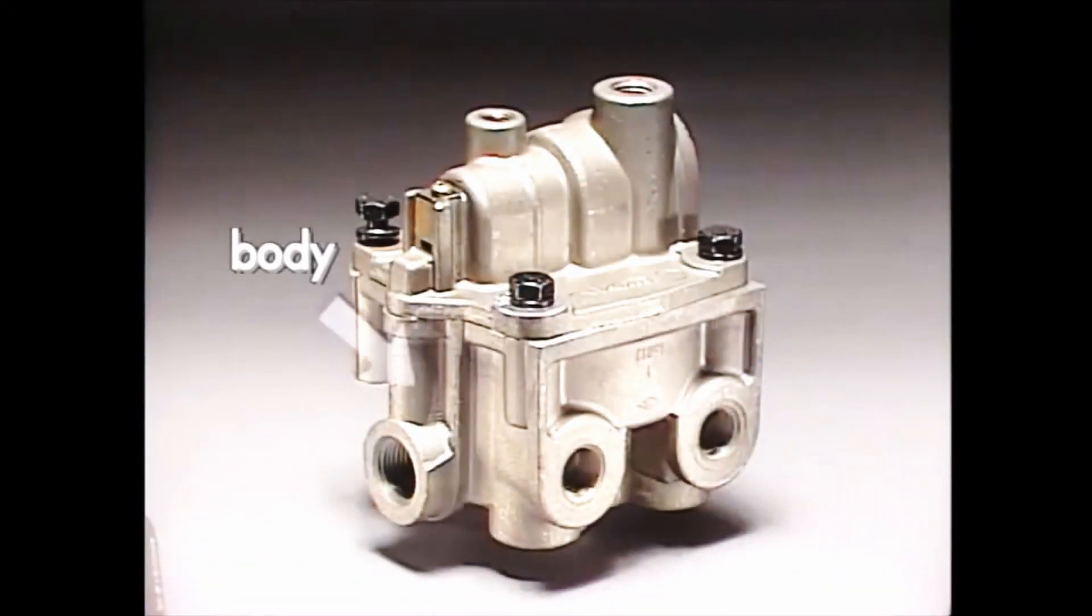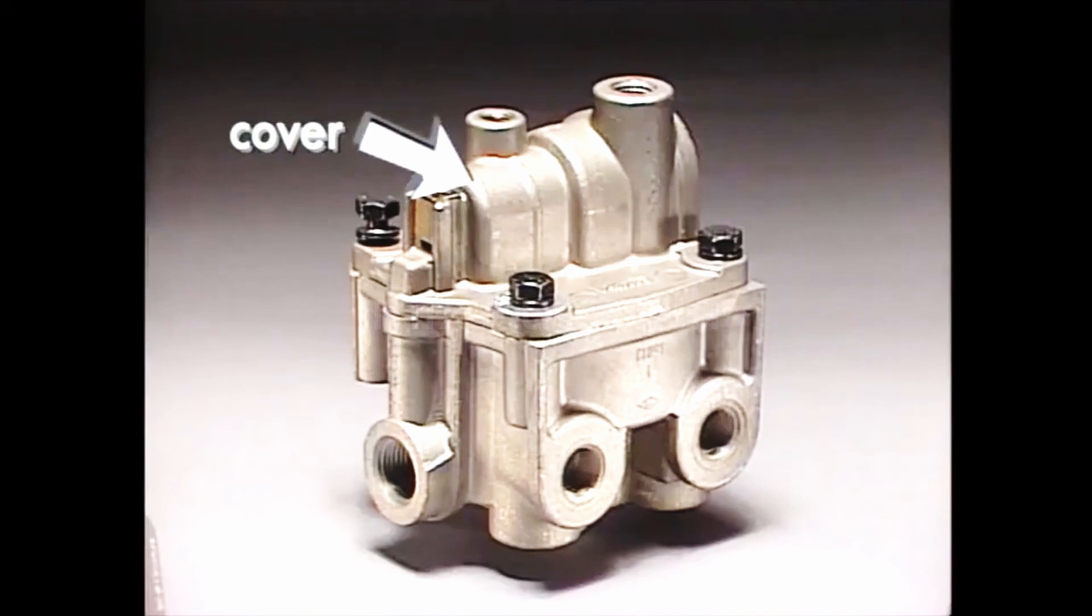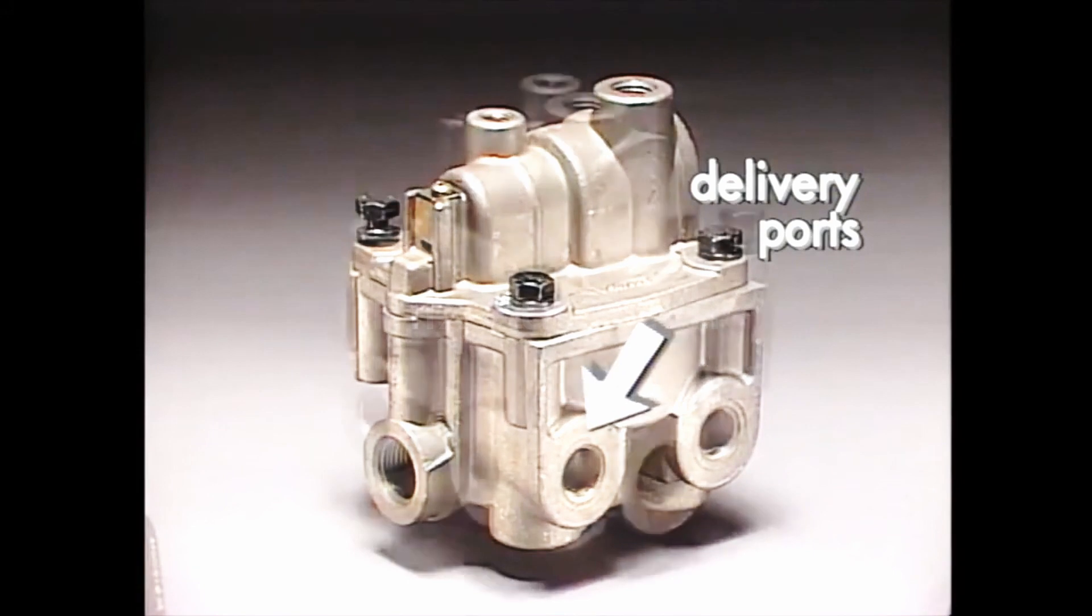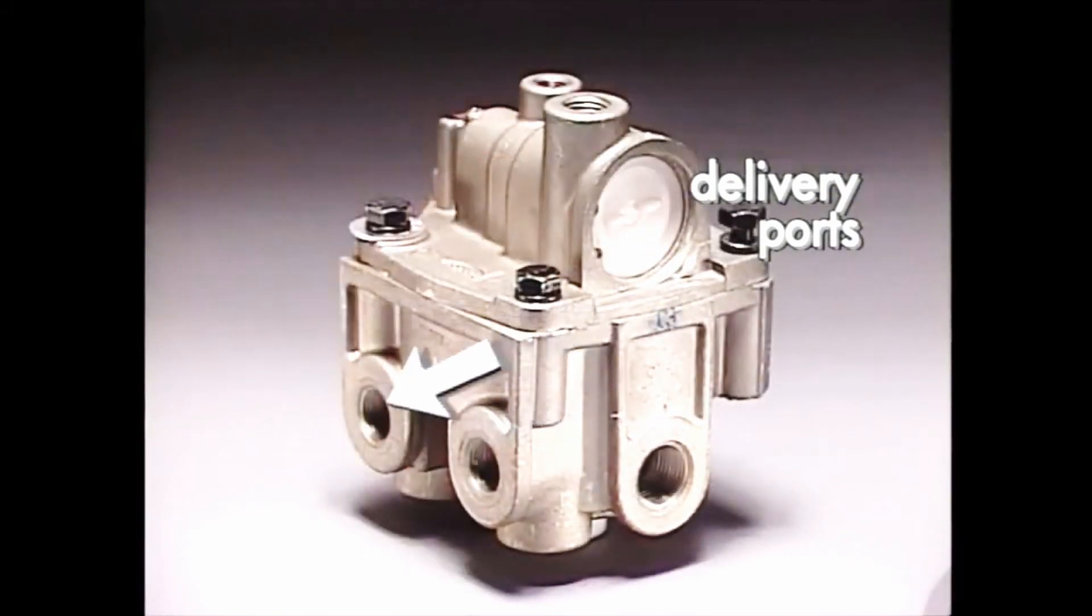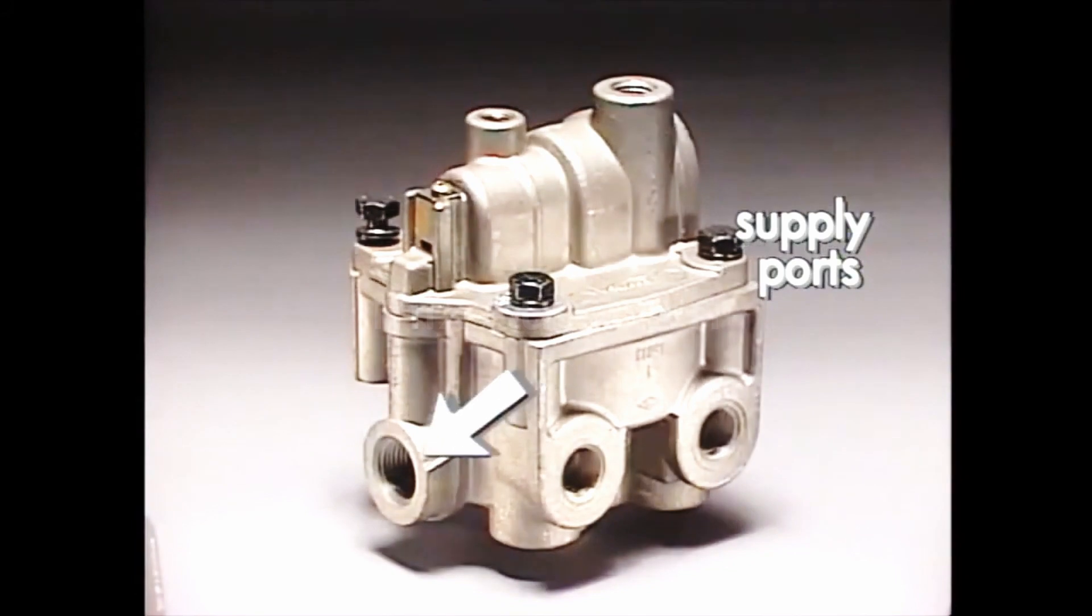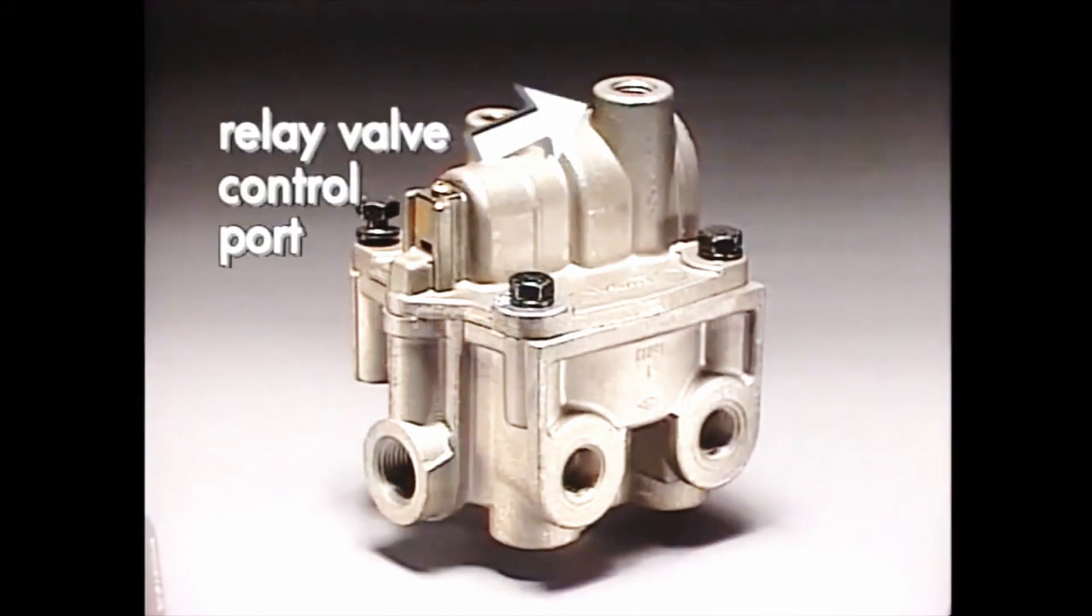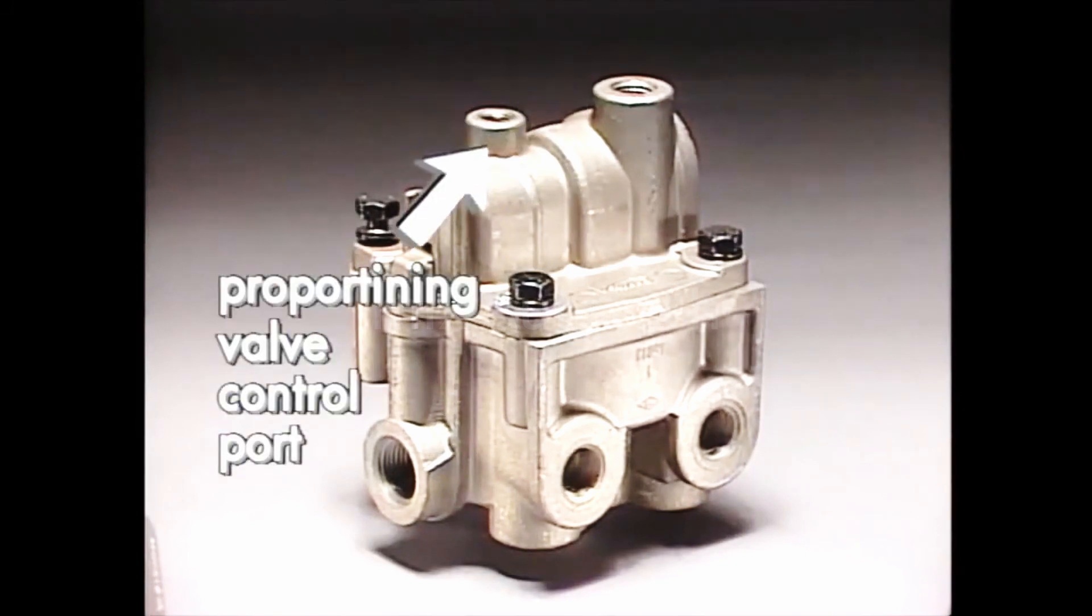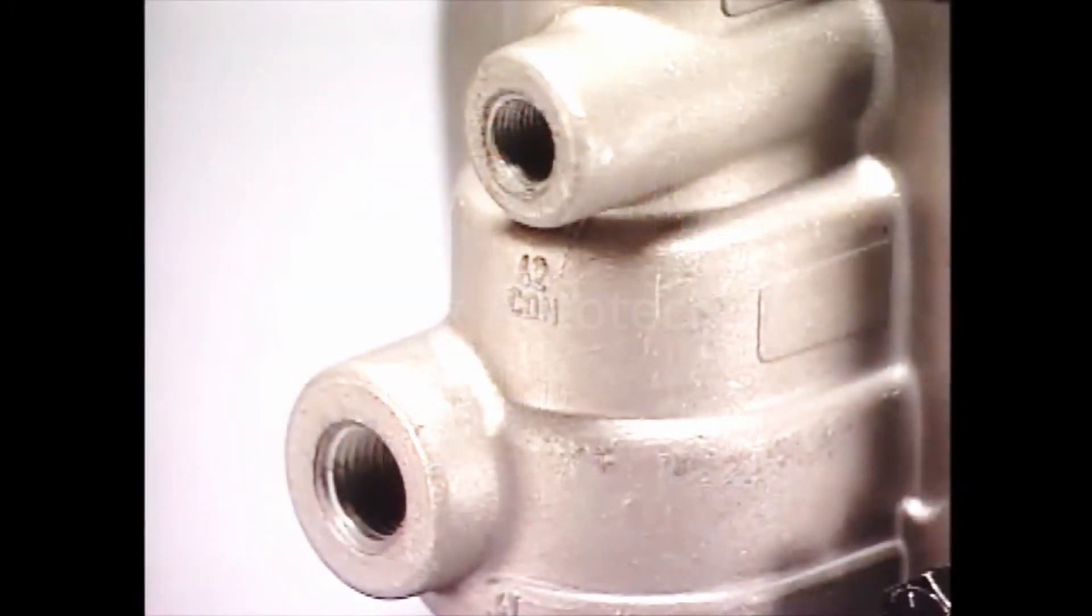The BPR-1 body contains a standard service brake relay valve, while the cover houses the proportioning valve. There are four delivery ports, two supply ports, one control port for the relay valve, and another for the proportioning valve. All air connections are identified with cast-in letters.